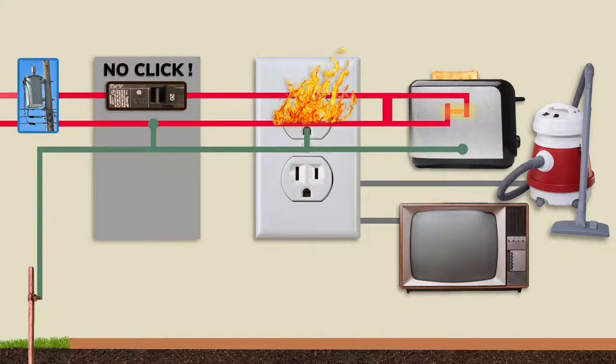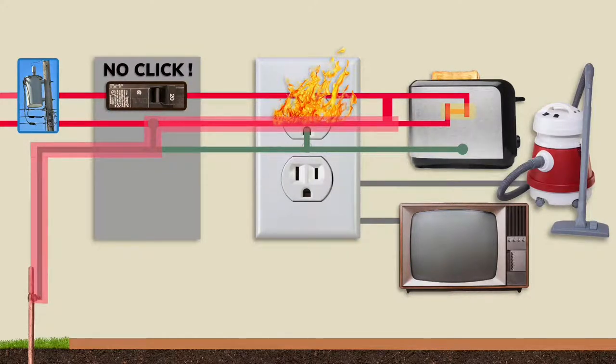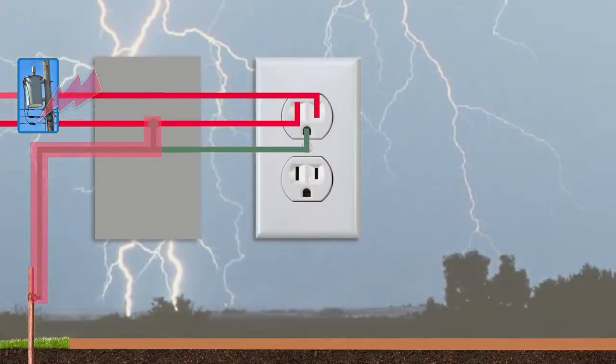In the unlikely event that the circuit breaker fails, some of the excess current will be diverted to the ground rod in the earth, which can also help prevent a fire. Ground rods also absorb voltage spikes from the power lines or nearby lightning.